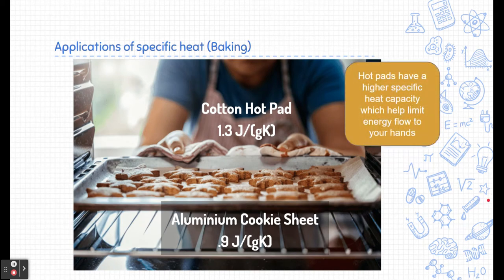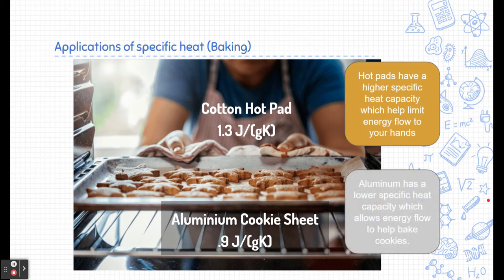While hot pads have a higher specific heat capacity, that means they're able to limit energy flow to your hands. It takes a lot more energy to cause the temperature of those cotton hot pads to change by one degree Celsius. Aluminum, on the other hand, has a lower specific heat, which is good. We want a lower specific heat because we want energy to be able to go from the aluminum into the cookies to bake them.